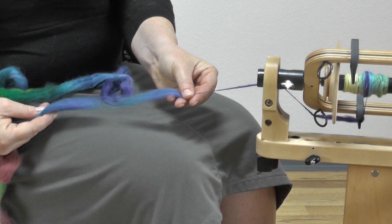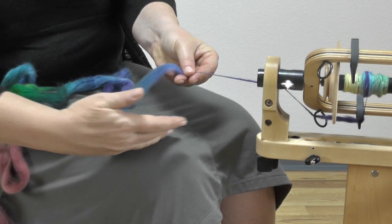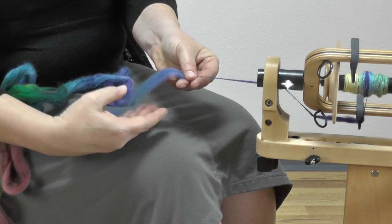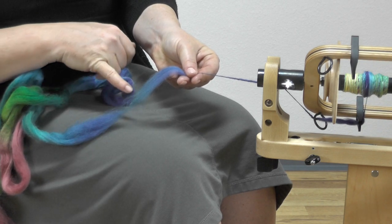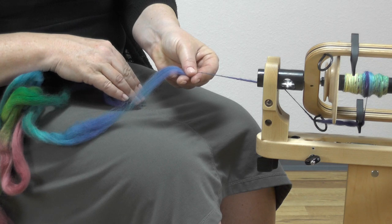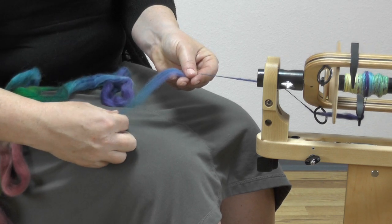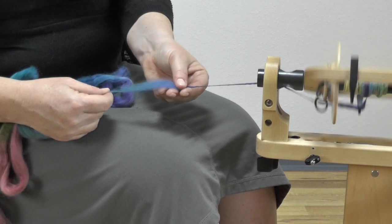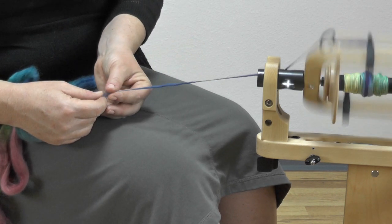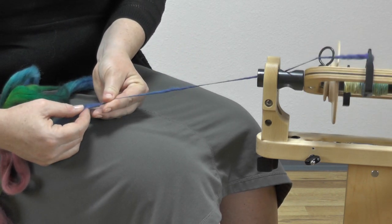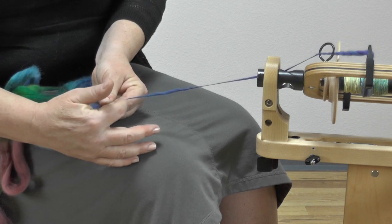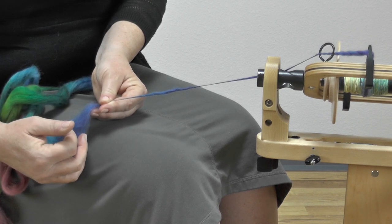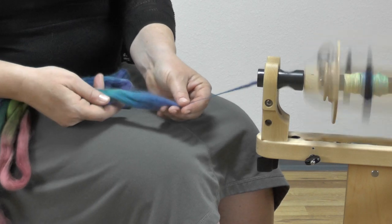An important part of this technique is that you draft all the way out to the point where only the tip of each staple length are overlapping. As you bring your forward hand back, you can add a little extra twist with your thumb and forefinger to make the join in the thin sections feel more secure.